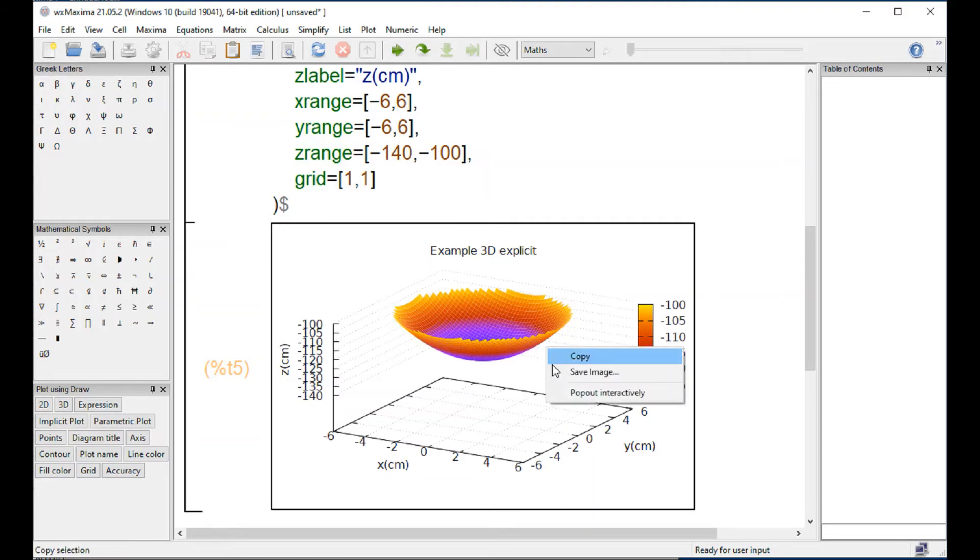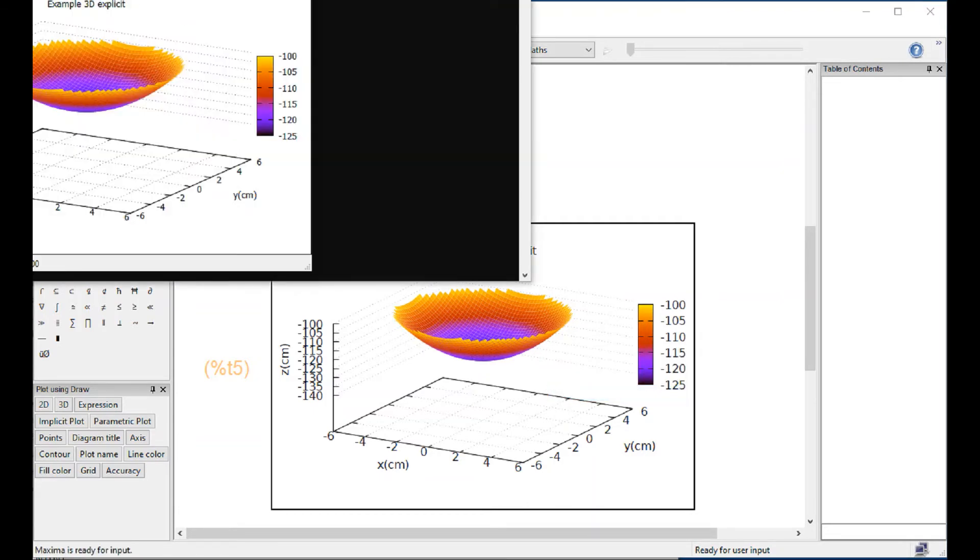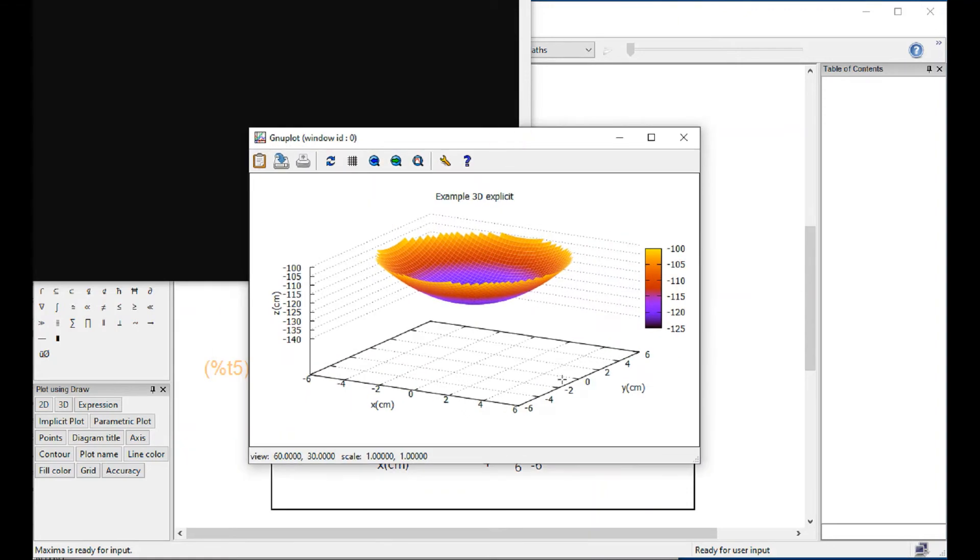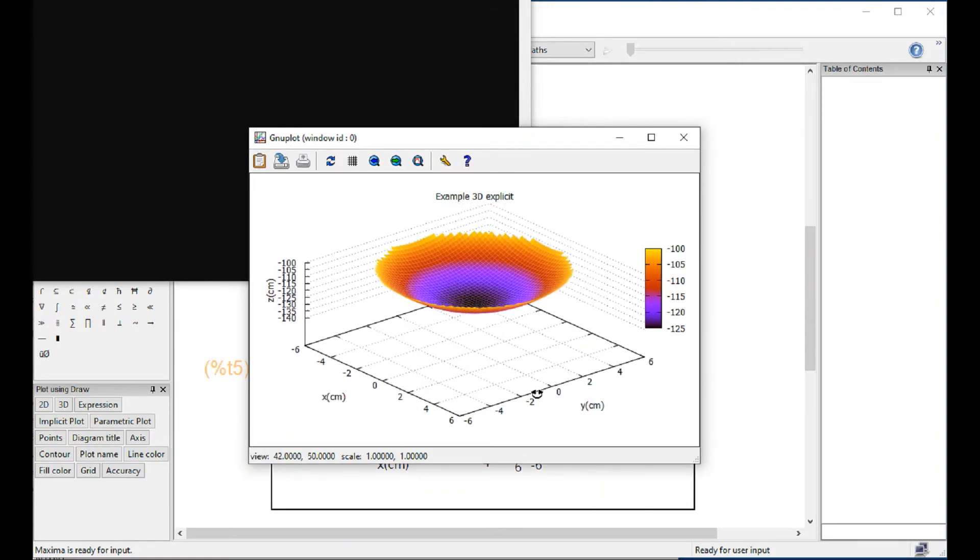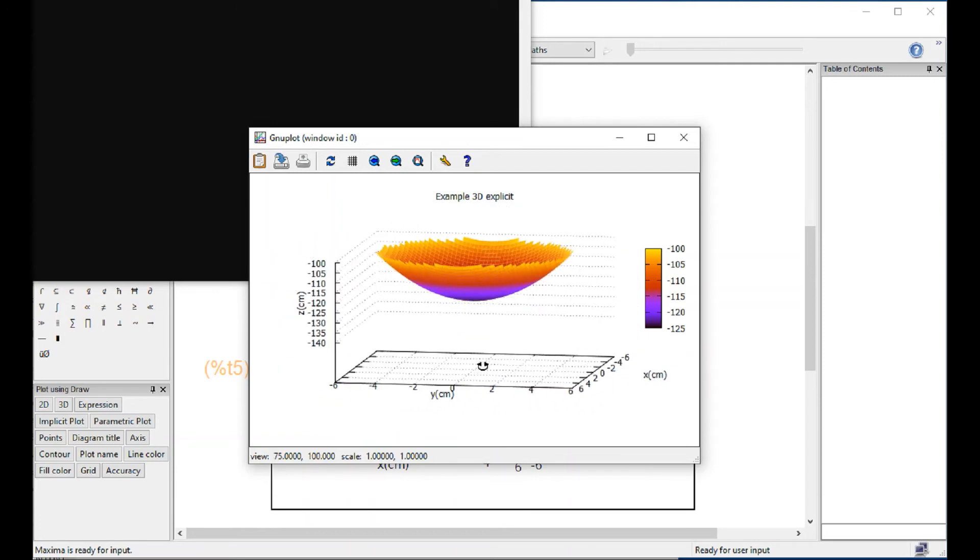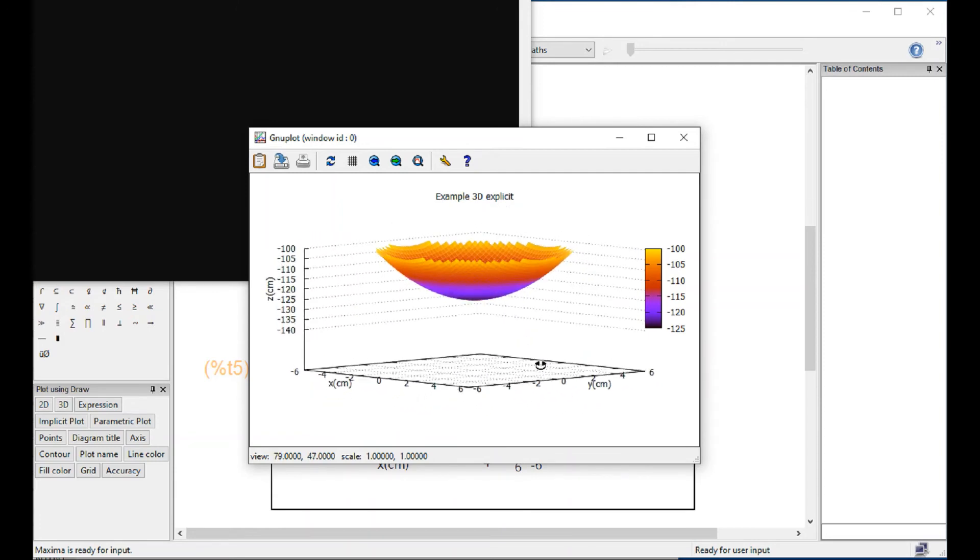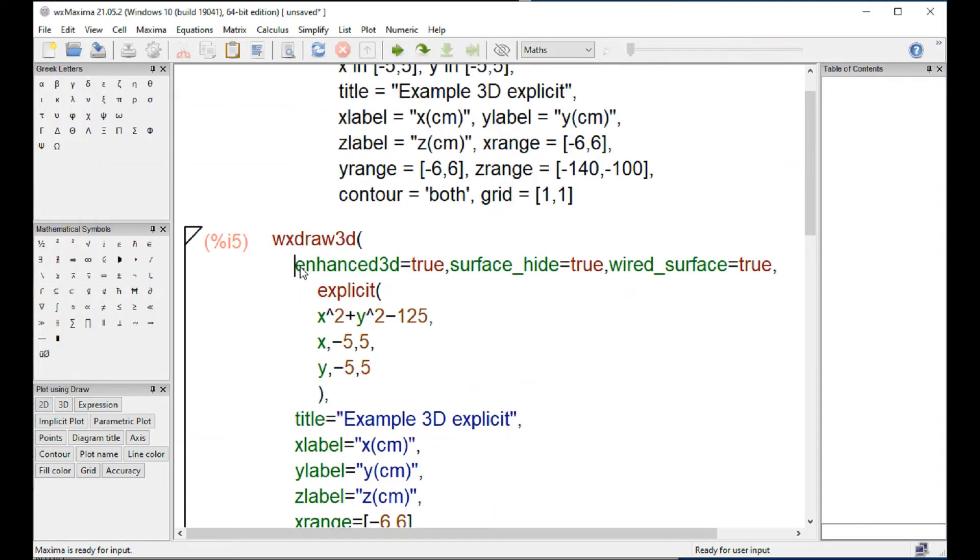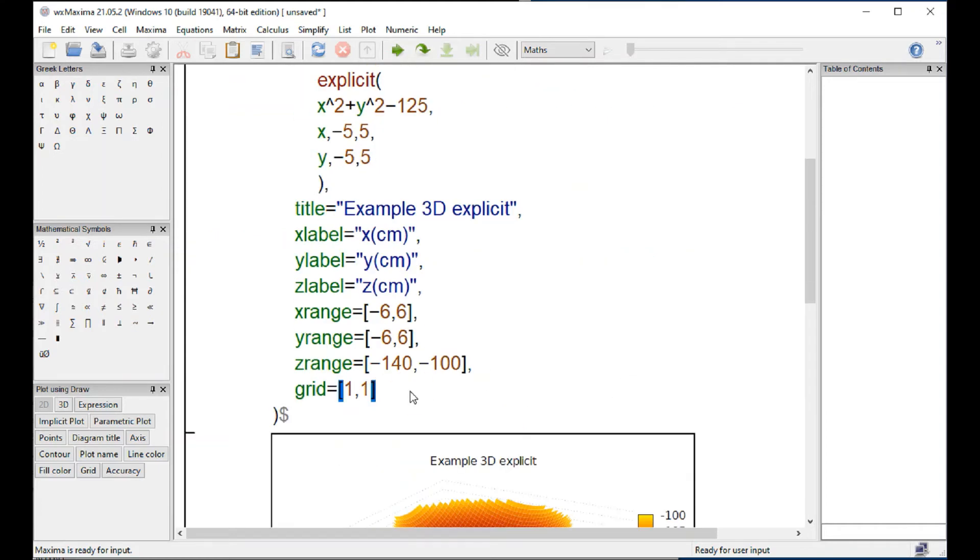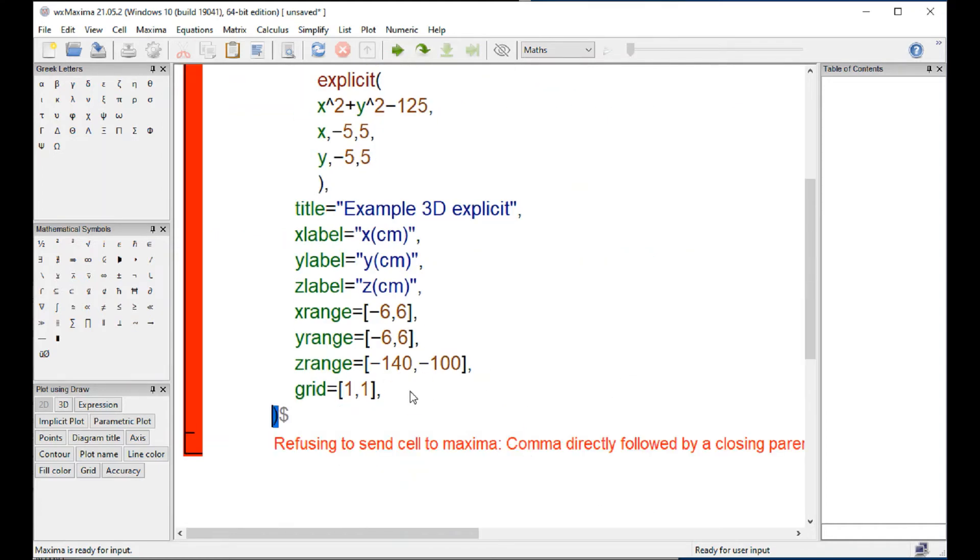If I do a right click, pop out interactively, bring that in here. You can change the orientation of the point of view, and you can see the graph in different ways. But it looks more solid this way, and so I would recommend you add that line for your three-dimensional graphs. Remember, if there's an extra comma there, it doesn't like it. It gives you an error,